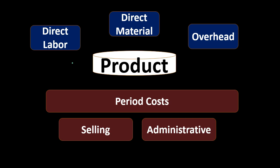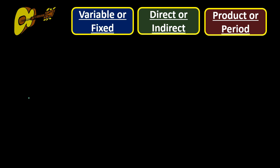If we look at some examples of cost classifications, we have variable cost versus fixed cost, direct or indirect cost, and product or period costs. Variable versus fixed looks at cost behavior; direct or indirect asks whether we can apply the cost to a particular unit or function; and product versus period cost asks whether we're dealing with the inventory being manufactured or with non-inventory items — basically administrative and selling.